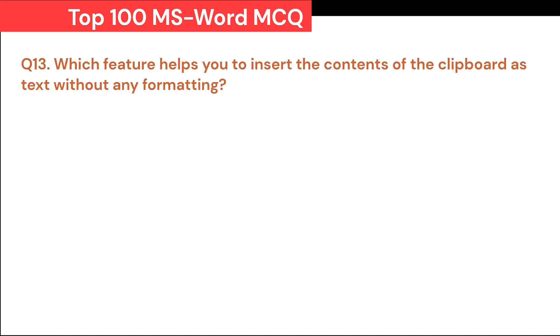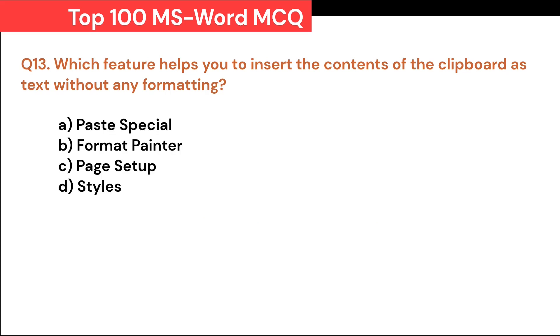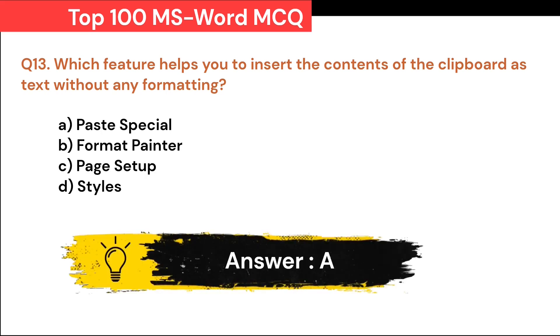Which feature helps you to insert the contents of the clipboard as text without any formatting? A. Paste Special. B. Format Painter. C. Page Setup. D. Styles. Correct answer is A. Paste Special.